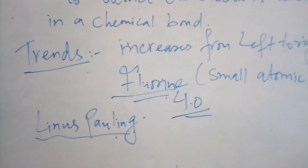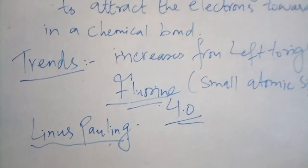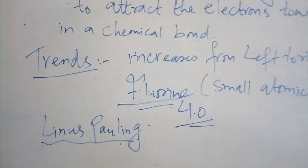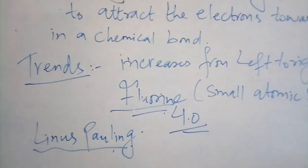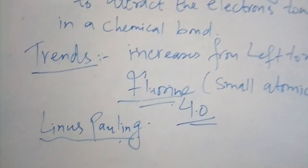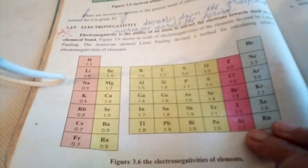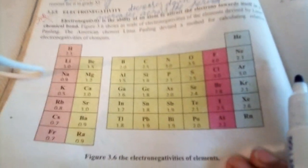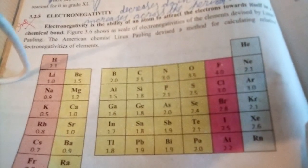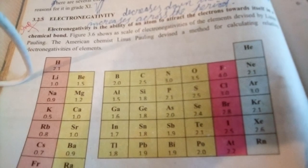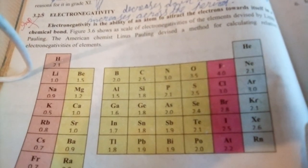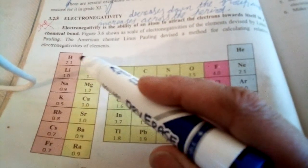Linus Pauling was an American chemist. He devised a method for calculating the relative electronegativity of elements and found that electronegativity increases from left to right. In your book, figure 3.6 is given. In this table, you can see that the value of electronegativity increases from left to right, while it decreases as we move from top to bottom.